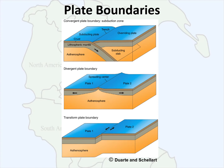There's also another type of convergence involving continental convergence. This is slightly different because the continental crust is thicker than the oceanic crust. As these plates collide, that's going to push up that material and create mountains, rather than a trench and volcanoes or a series of island arcs.